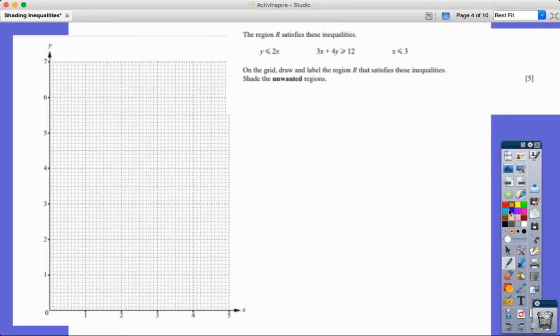Now the first tip that I've got, first thing that I would do if I was faced with a question like this is read it very carefully. So it says the region R satisfies these inequalities. On the grid, draw and label the region R that satisfies these inequalities and shade the unwanted region.